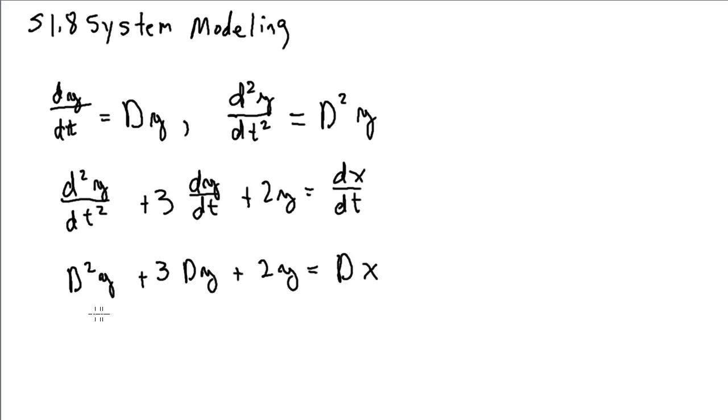So d isn't really a variable in this equation, although it looks like one. And in some cases, we'll treat it like one. For example, later on, you'll see that we can treat this like a variable and actually factor out y. So we're left with d squared plus 3d plus 2 is equal to dx. But d is really an operator.